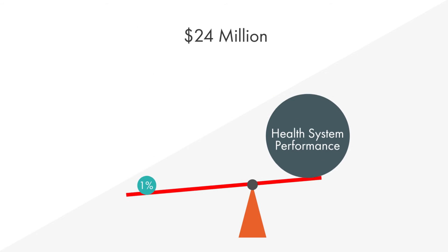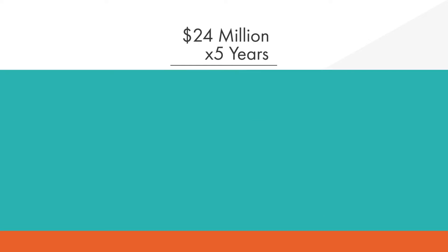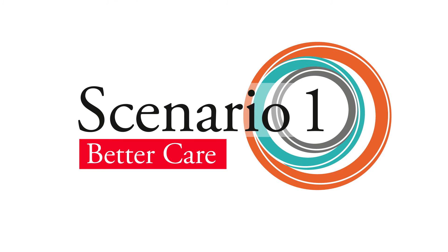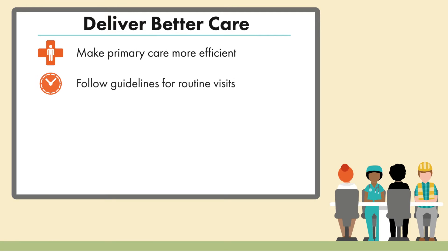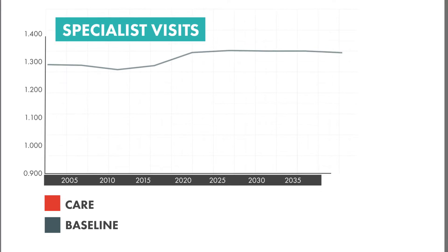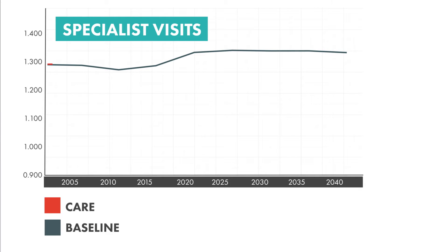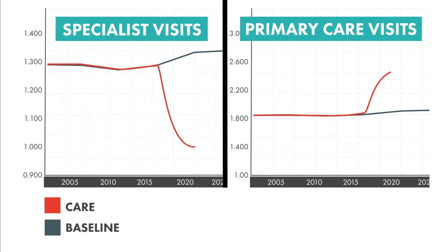What if we invested just 1% in a temporary fund to seed innovations? That would be $24 million per year, say, for five years. What could we accomplish with that as a beginning? Let's start with an effort to deliver better care at lower cost. This could include making primary care more efficient, following guidelines for routine visits, helping people manage their own chronic conditions, coordinating care to avoid waste, and establishing medical homes to reduce unneeded visits to expensive specialists or emergency rooms. As these innovations play out over time, patterns of care begin to shift dramatically — for example, there is much less reliance on expensive specialists and a greater emphasis on primary care.